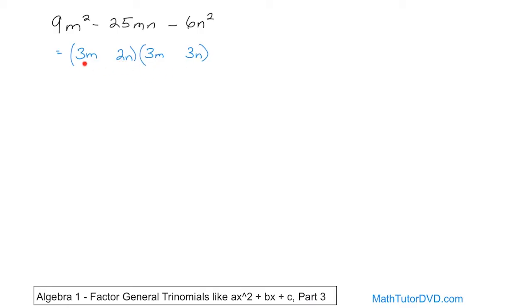Is there any way 6 and 9 can give me 25, even if I add them or subtract them? There's no way it's going to work. 6 and 9, that's going to be 15. And if I subtract them, it's even worse. So instead of scratching through it, I just kind of write a 'no' off to the side.